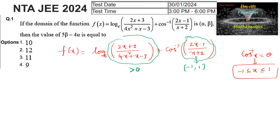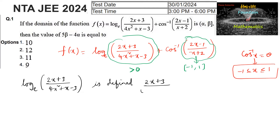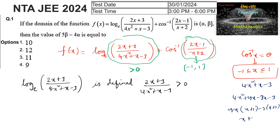Using these two conditions, first consider the logarithm function. Log((2x + 3)/(4x² + x - 3)) is defined when (2x + 3)/(4x² + x - 3) > 0. Factoring the denominator: 4x² + x - 3 = 4x(x+1) - 3(x+1) = (x+1)(4x-3).